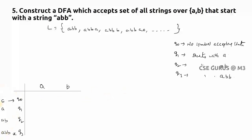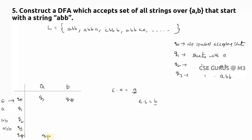For the transition table: Q0 on epsilon means no symbol, so on input A we get A only — is there a state starting with A? Yes, Q1. On input B we get B only — is there a state starting with B? No. So we write the dummy state Q_pi. We also place Q_pi for both transitions of Q_pi itself, since it is a non-final dead state.